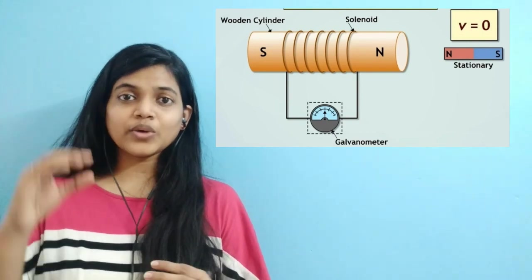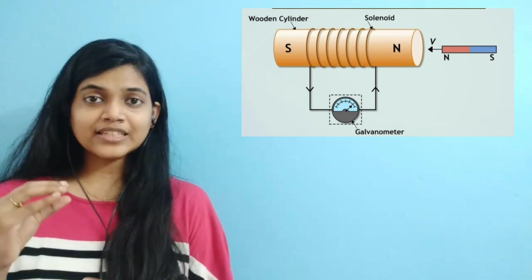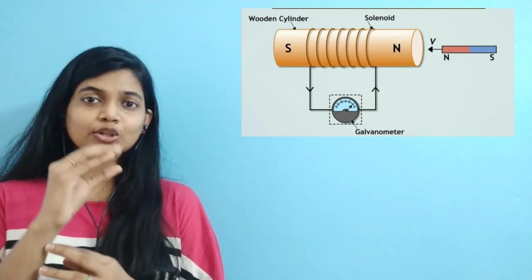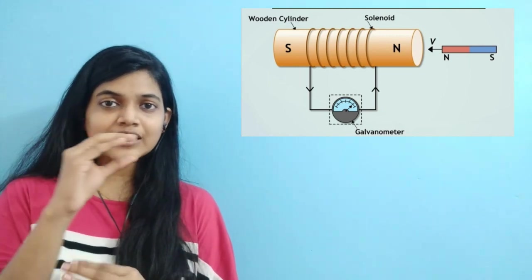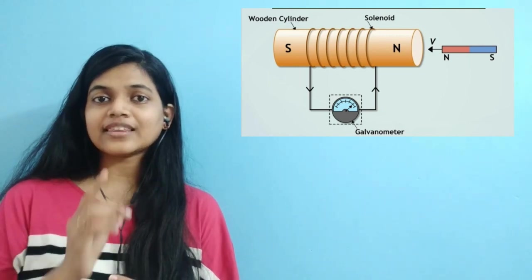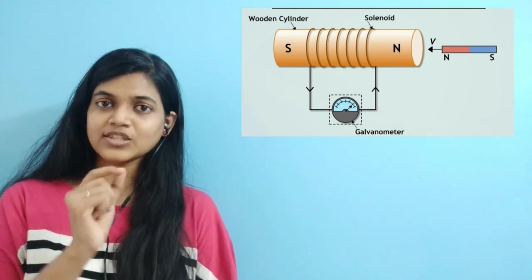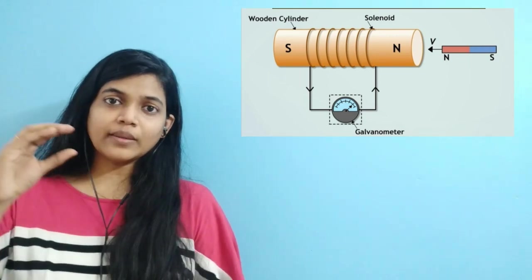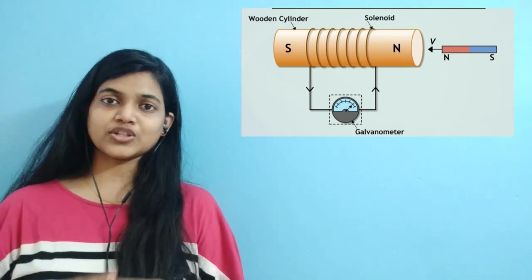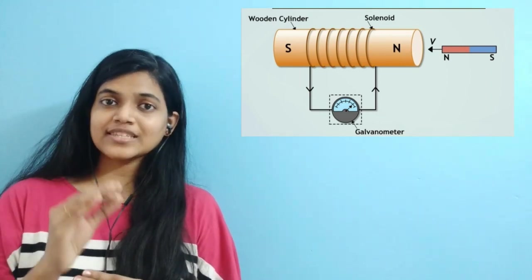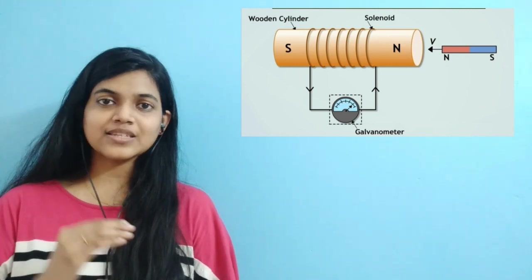Now we are moving the magnet slowly towards the coil. When the magnet is in motion, we can see that there is a deflection in the galvanometer — to be precise, to the right side. This means that there is a current flowing through the coil when the magnet is moving.